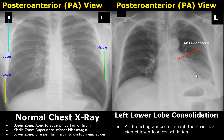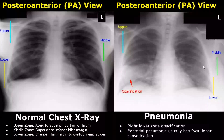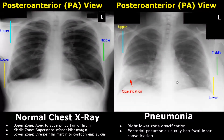An air bronchogram seen through the heart is a sign of lower lobe consolidation, and this can differentiate it from a left lower lobe collapse. Right lower zone opacification occurs mostly in the setting of pneumonia. Bacterial pneumonia usually has lobar consolidation.